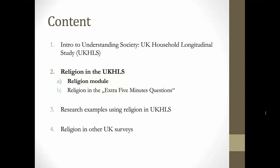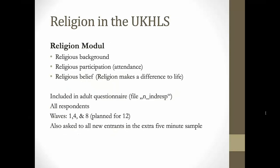The religion module is the main module on religion in the UK HLS. It includes basic information about the religious background of respondents, information about religious participation and attendance, and some information about religious belief. These questions are in the adult questionnaire, stored in the file N_indresp, where N is a placeholder for the wave labels A, B, C, D and so on. These questions were asked to all respondents in waves one, four and eight, with wave twelve planned next.